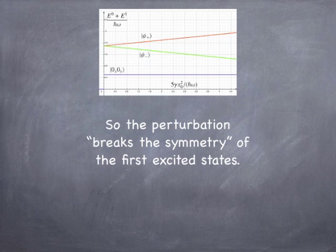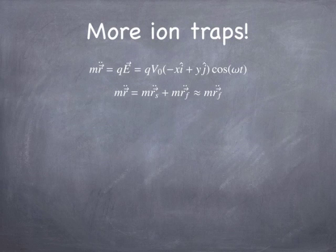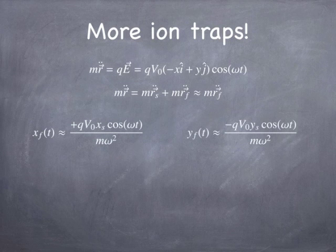Now back to ion traps. We worked out the fast motion last time by taking the time-dependent potential, sticking it into Newton's second law, separating the slow and fast motion, and claiming the second derivative of the fast position was much larger than that of the slow position. We got the fast position as a function of time in the x and y directions, and there's a sign difference between x and y, which is significant.